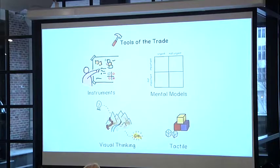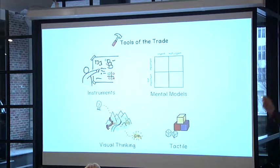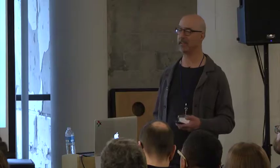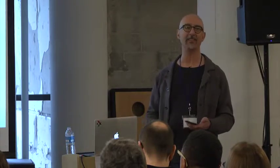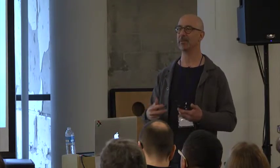Visual thinking is when you take mental models, start to attach metaphor to them, and start to draw things to help people get out of their heads. Tactile tools are things like blocks, dice, cards, pipe cleaners, and other things for the tactile people who learn and think that way.